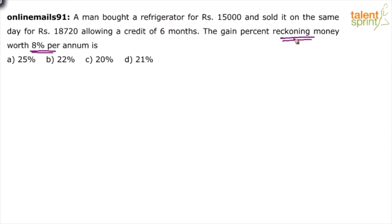The current rate of interest is eight percent per annum. So basically what you need to consider here is: today, instead of buying this refrigerator and selling it to someone for 18,720 — where I'll get the amount after six months — if I directly put 15,000 rupees in the bank, the bank will pay me eight percent per annum, so in six months I'll make some money. Based on that, how much has he gained? There are two cases: one where he spent 15,000 on the refrigerator and gets 18,720 after six months; the other where he puts 15,000 in the bank at eight percent per annum.